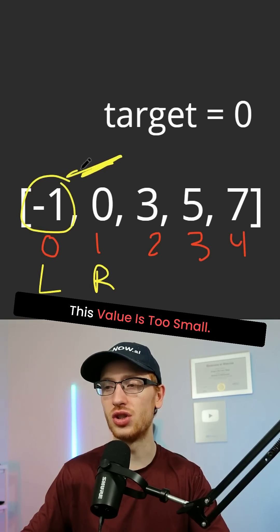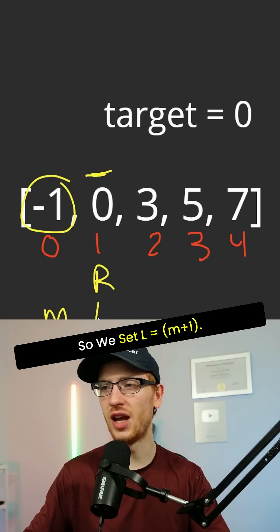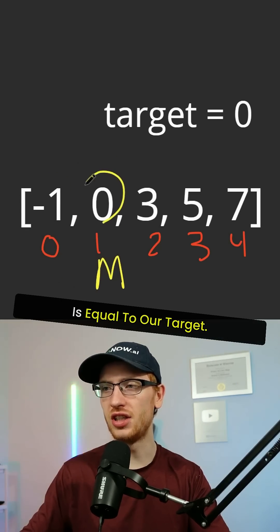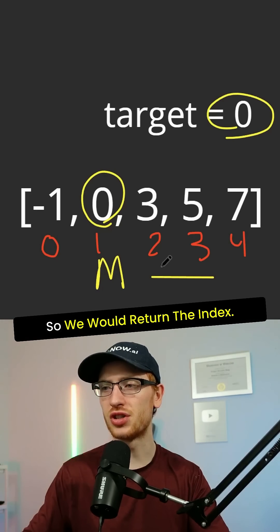No, it's not. This value is too small. So we set L to be M plus 1 and on our last iteration, we would see that the array at M is equal to our target. So we would return the index.